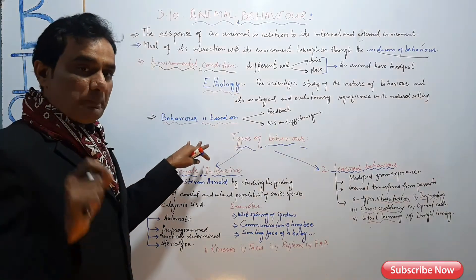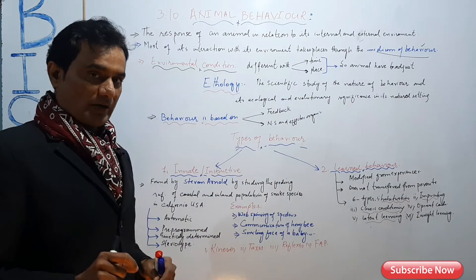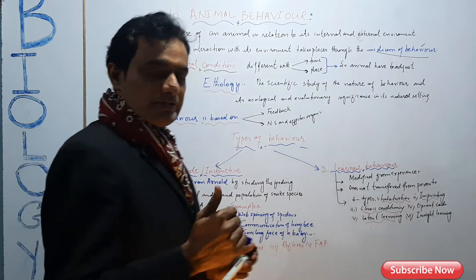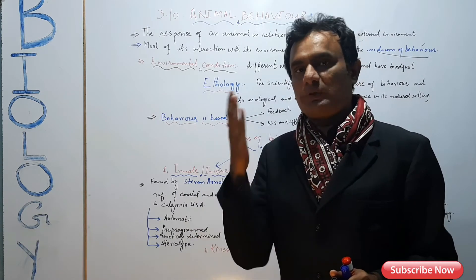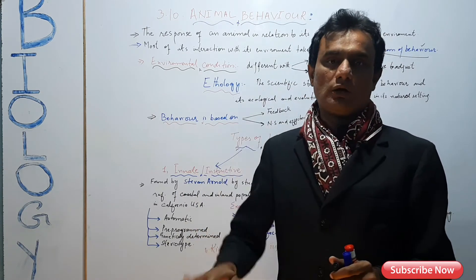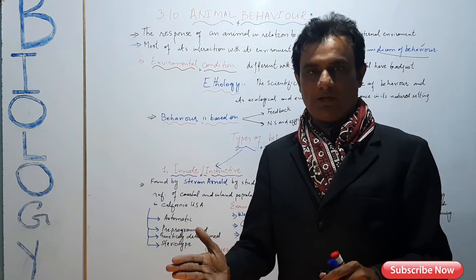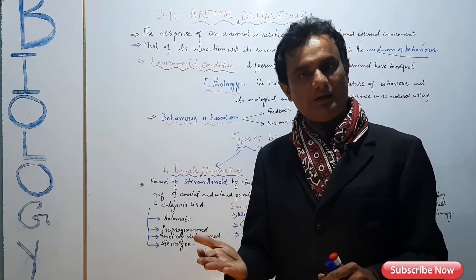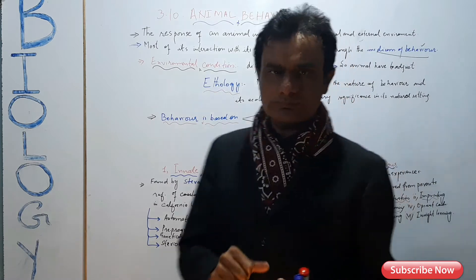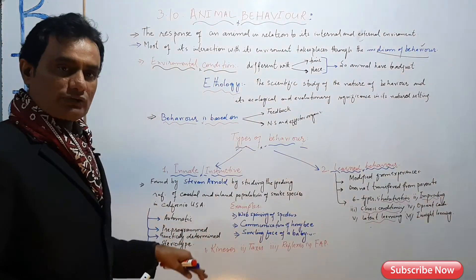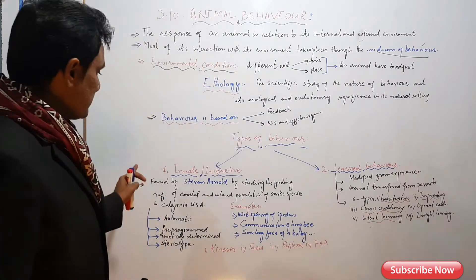Behavior is based on feedback, the nervous system, and effector organs. There are two main types of behavior: innate behavior, also called instinctive behavior, and learned behavior. First we will talk about innate behavior.